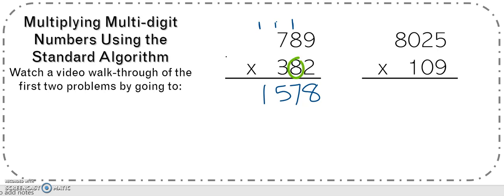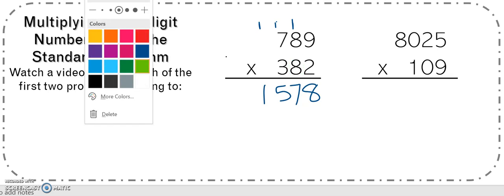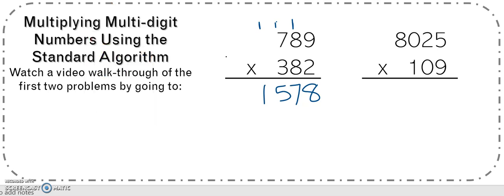So now I'm going to be multiplying by this 8 here. So since I'm doing that, I need to put a 0 as my placeholder, because I'm not working in the 1's place anymore. I'm working in the 10's place. So there's my 0 as a placeholder, and now I can go 8 times 9 is 72.